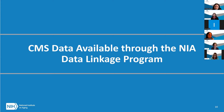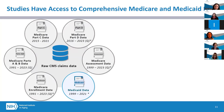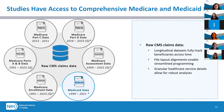Now let's dive into the CMS data available through the NIA Data Linkage Program. This slide presents an overview of the different types of data available. We have added asterisks to denote files or data types that complement or succeed each other. The program has comprehensive data available, including raw CMS claims data. These data sets are longitudinal, which fully track beneficiaries across time. The file layout has been aligned to allow streamlined programming, and the granular healthcare service details allow for robust analyses.